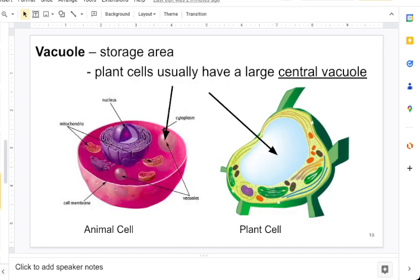Vacuoles are storage areas and especially prominent in plant cells. Plant cells usually have larger central vacuoles compared to animal cells, which have smaller vacuoles, and this is where cells can store certain things throughout.